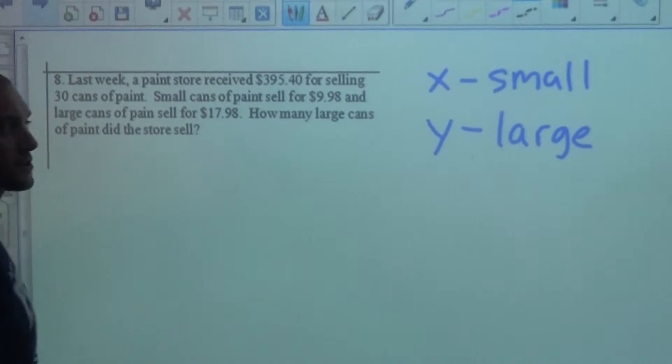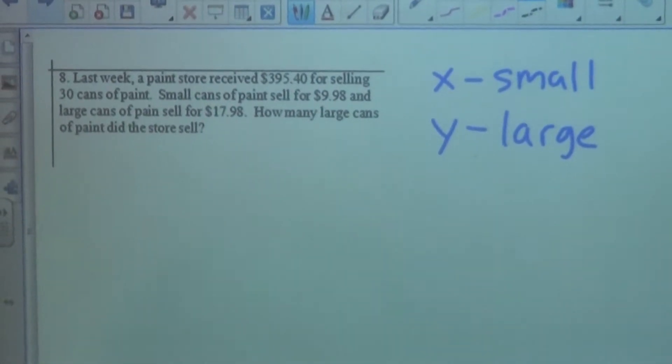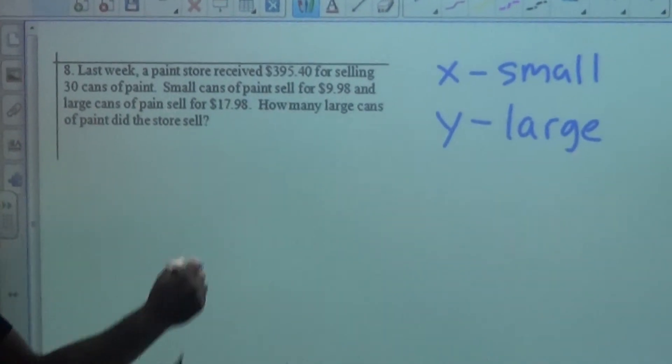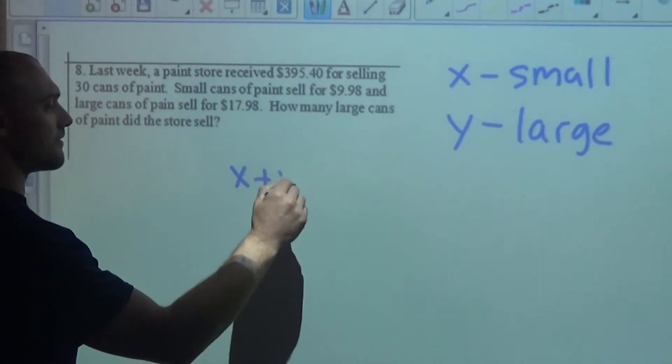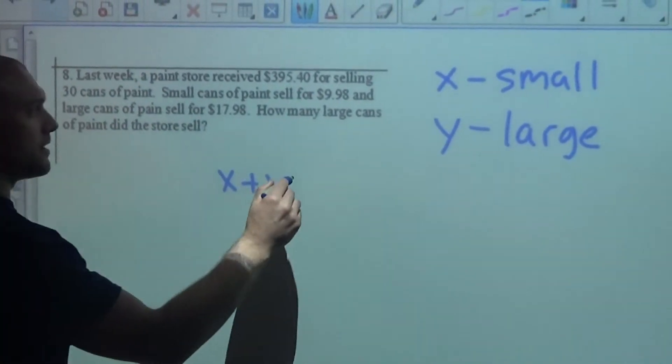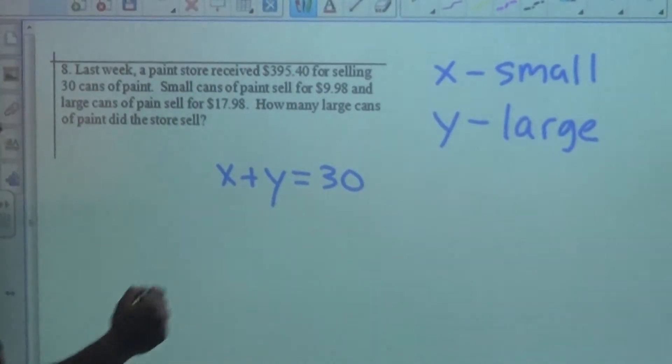So first, x is going to represent small and y is going to represent large. If I add the number of cans that were sold, that would add up to 30.